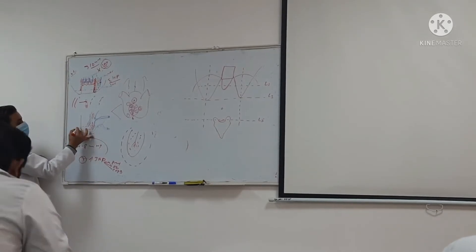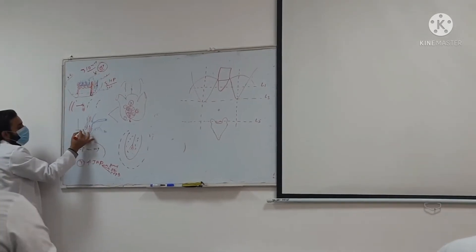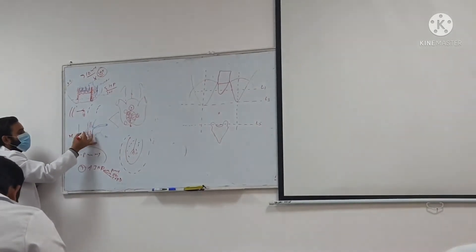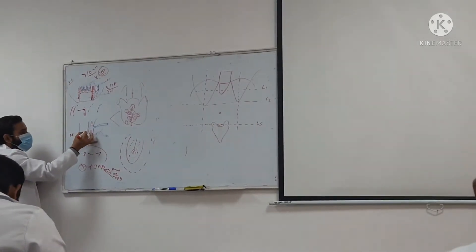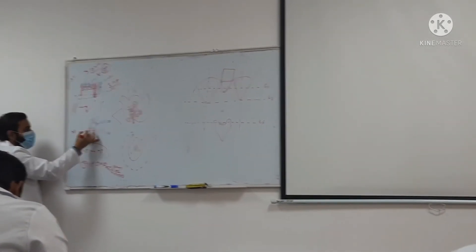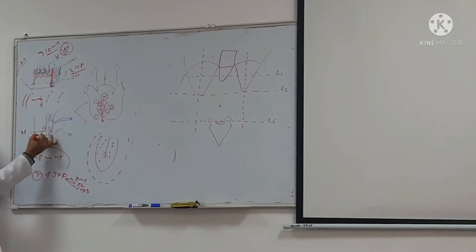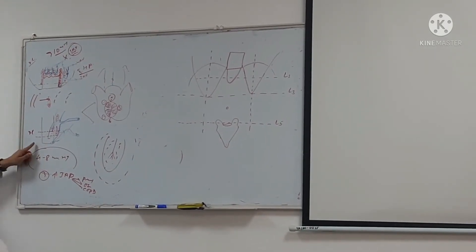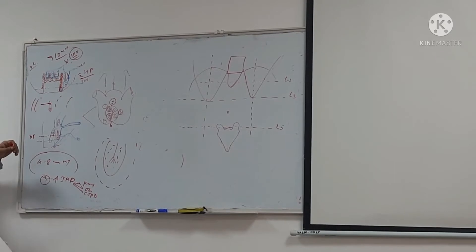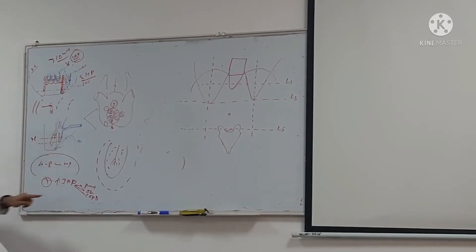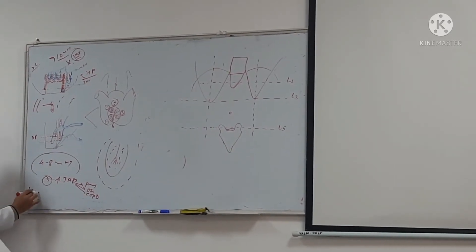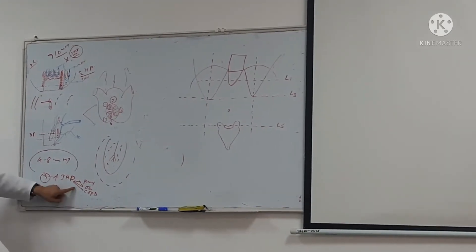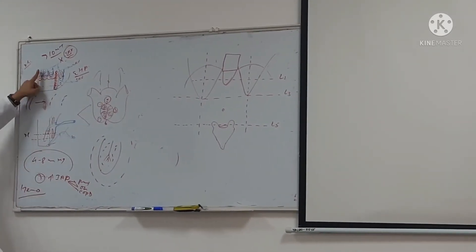When these veins dilate, they begin to burst. If they burst, they begin to protrude out. This condition is called hemorrhoids. So this is one condition where the pressure increases and leads to hemorrhoids.